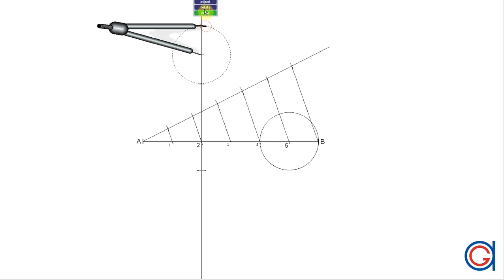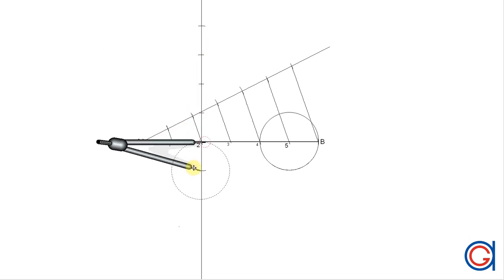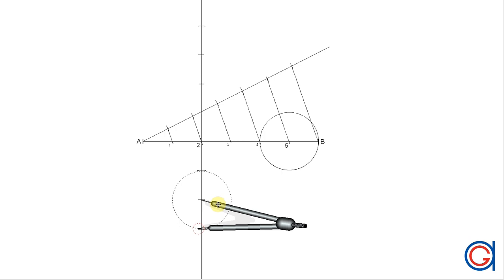Now we're going to repeat the process below the line segment AB and mark four more divisions below the line. This is our second division, our third, and finally our fourth division.